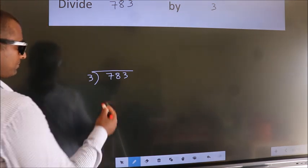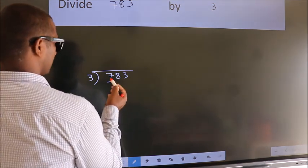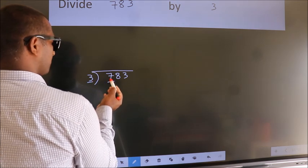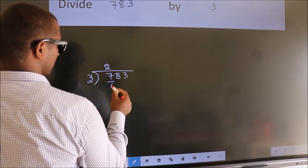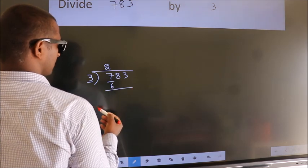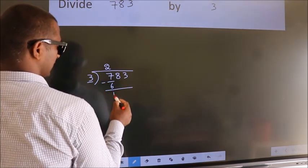Next. Here we have 7. Here 3. A number close to 7 in 3 table is 3 2s 6. Now we should subtract. We get 1.